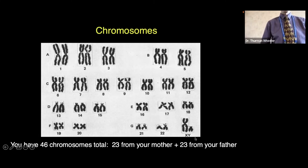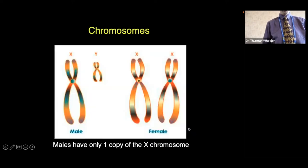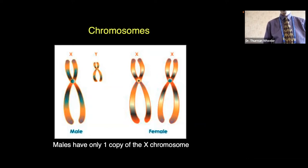The XY chromosome is distinct. The Y chromosome comes from the father. Males have only one copy of the X chromosome, and females have two — so that's a distinguishing feature.